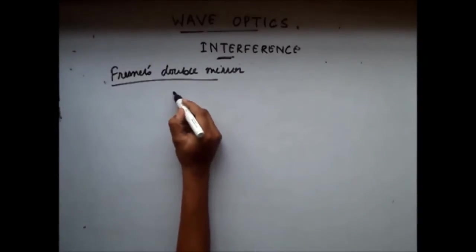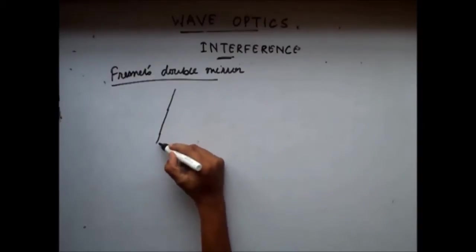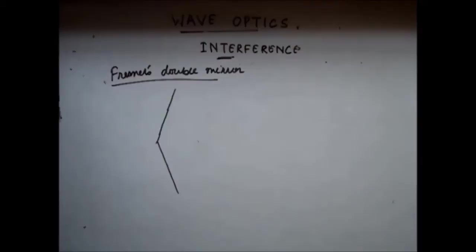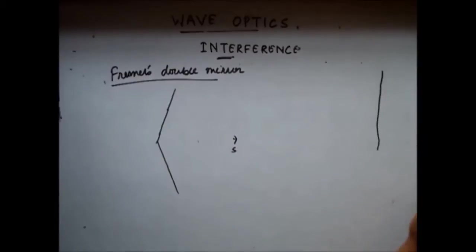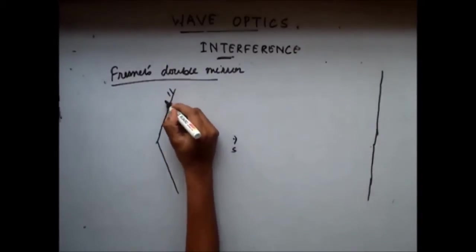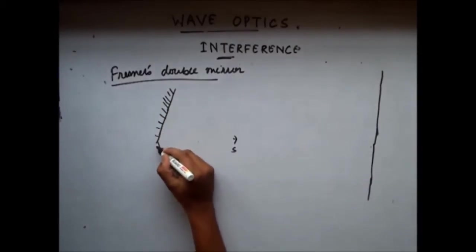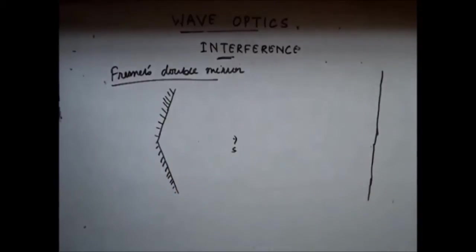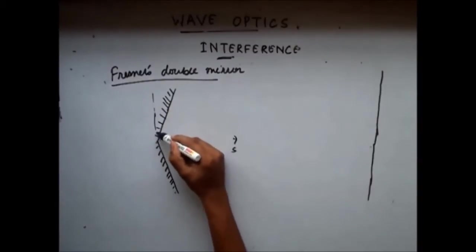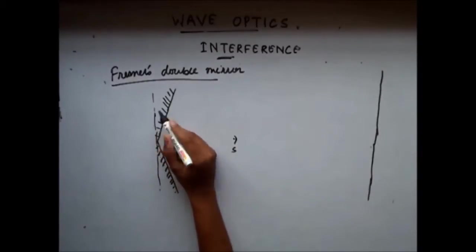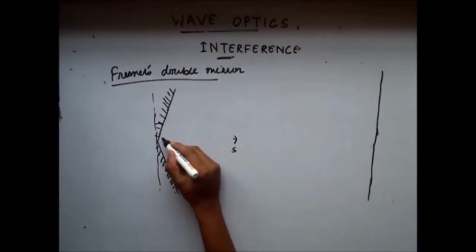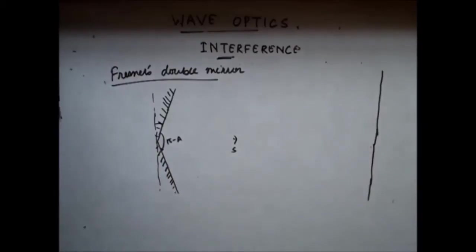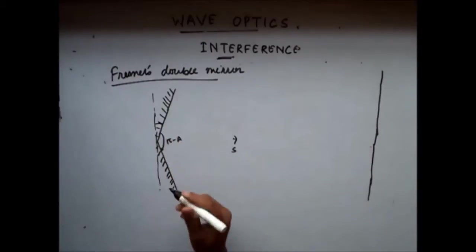In Fresnel's double mirror, we have a source and two mirrors. Both mirrors are inclined from the perpendicular with some angle — let's say this angle is a/2, and this angle is also a/2. So the angle between them is π minus a. The angle between the two mirrors is kept as π minus a, and the angle a is very small, tending to approach 0.